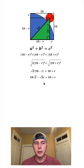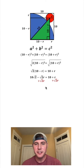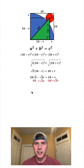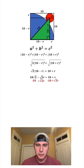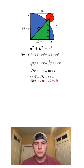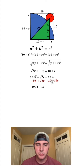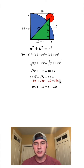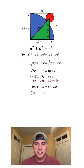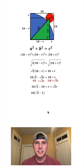Now we have an R on both sides, so let's move them all to the same side. We'll add √2·R to both sides, and while we're at it, subtract 10 from both sides. On the left-hand side these two terms cancel, leaving us with 10√2 minus 10. On the right-hand side these two terms cancel, leaving us with R plus √2·R. Both terms on the left have a 10, so we can factor out a 10, giving us 10(√2 minus 1).